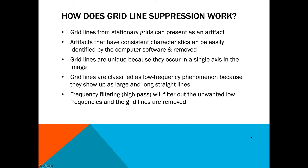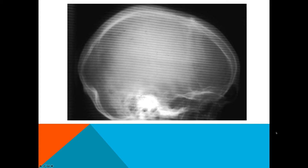Grid line suppression: grid lines from stationary grids can show up as an artifact, but this artifact has a consistent characteristic that's easily identified by the computer and can be easily removed. Grid lines are unique because they occur in a single axis and are classified as a low frequency phenomenon, showing up as large, long straight lines. High pass filtering will filter out the unwanted low frequencies and remove the grid lines. The final image shows what it would look like if the grid suppression software failed — you can see large grid lines — but fortunately we have software to take care of that. That's the end of this portion of the lecture.